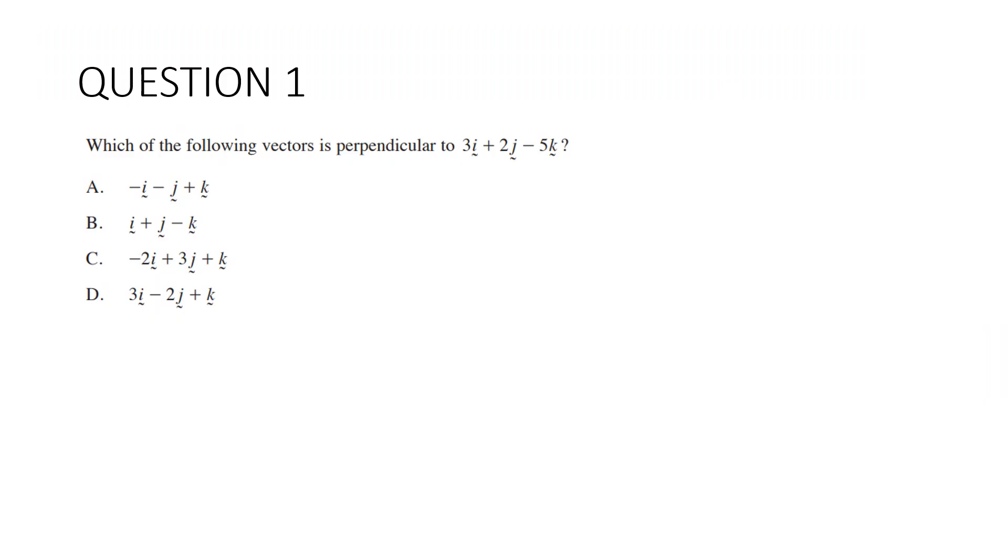Question 1. Which of the following vectors is perpendicular to 3i plus 2j minus 5k? The best way to do this is to use the dot product. We want it to be equal to zero and we're going to eliminate our answers. I'm going to start with D because quite often the real answer is towards the end. So let's do the dot product. 3 times 3 is 9, take away 2 times 2 which is negative 4, plus 1 times negative 5. And lo and behold, it is D.